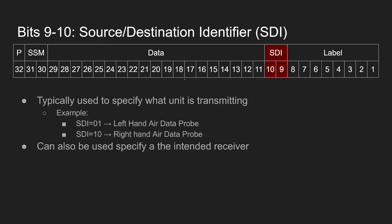The next part of the ARINC-429 frame is the SDI, which stands for Source Destination Identifier. This is usually used to tell us where the data is coming from. For example, SDI 01 might mean the data is coming from your left-hand air data probe, and SDI 10 means it's coming from the right-hand data probe. With two bits you can also have 00 and 11, and those can be unused as well. The SDI can also be used — though it's less common — to specify the intended receiver, but most commonly it is used for identifying the source and not the destination.